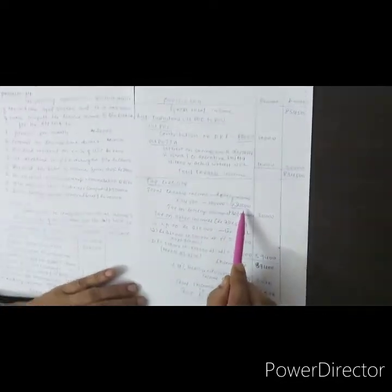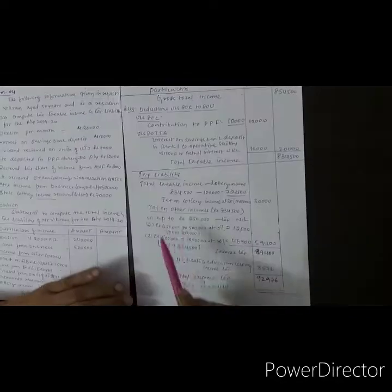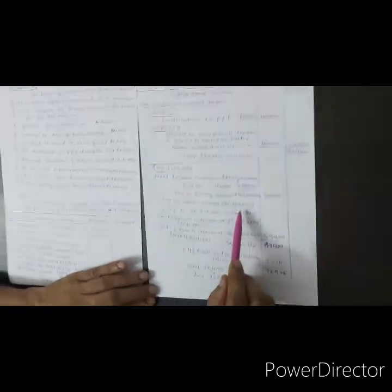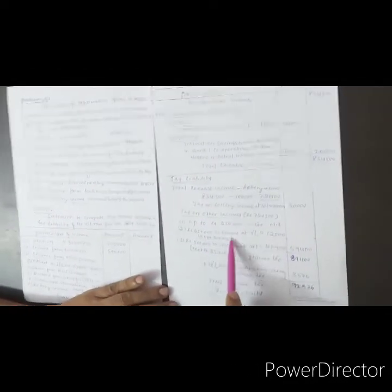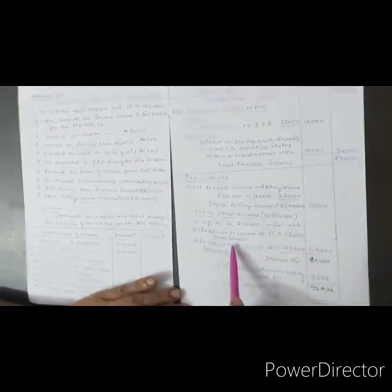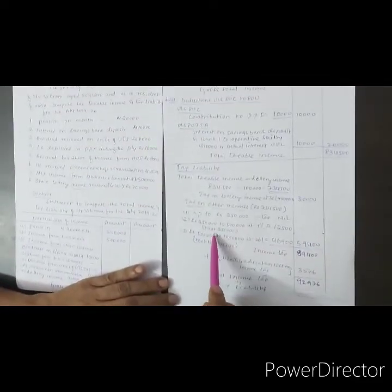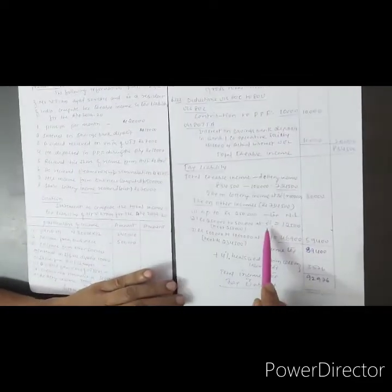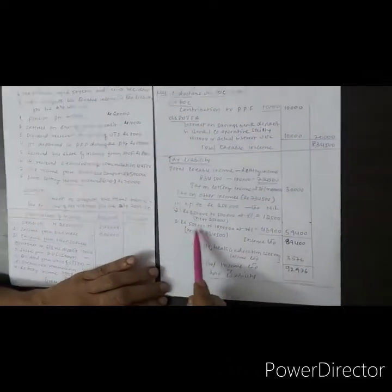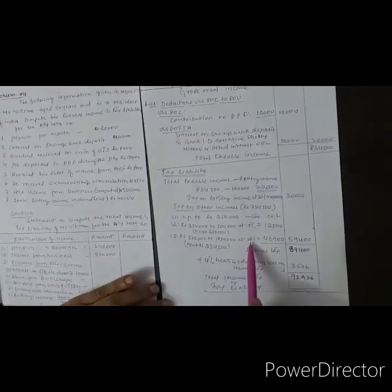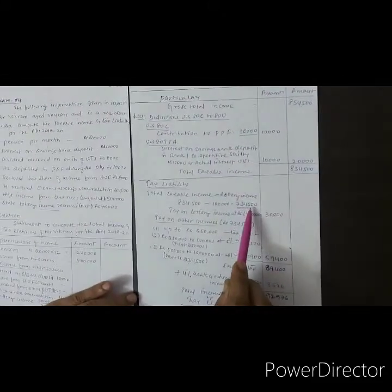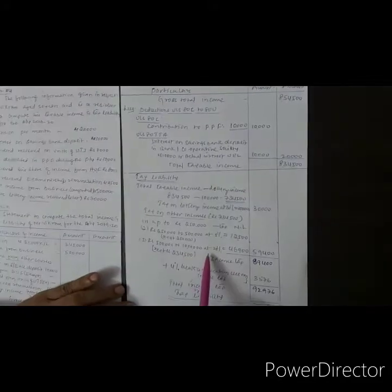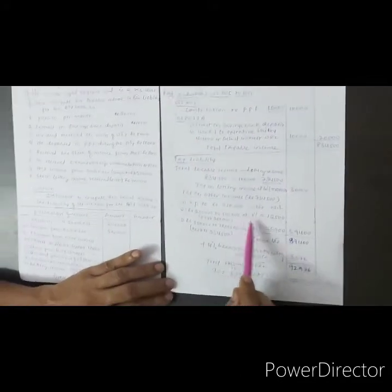Remaining is 7 lakh 34,500 rupees. Now we calculate tax on other income. For a normal individual, up to 2 lakh 50,000 rupees, tax is nil. From 2 lakh 50,000 to 5 lakhs, the difference is 2 lakh 50,000 at 5 percent tax equals 12,500 rupees. From 5 lakhs to 10 lakhs is 20 percent tax. The income is 7 lakh 34,500 rupees. Up to 2 lakh 50,000 is nil. Up to 5 lakhs is already calculated.